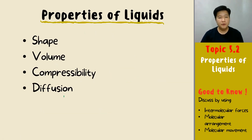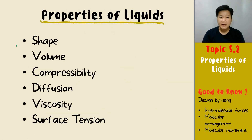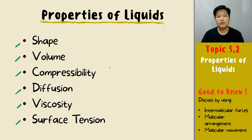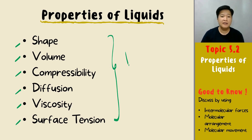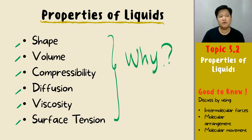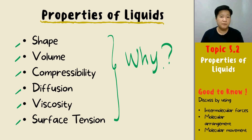We are going to look into six different properties of liquid. Many of you might already know what they are, but here we are not only learning the property of liquid — we are learning why the liquid behaves that way. Don't only tell me that liquid doesn't have a shape or has a fixed volume; we want you to explain the property of liquid.